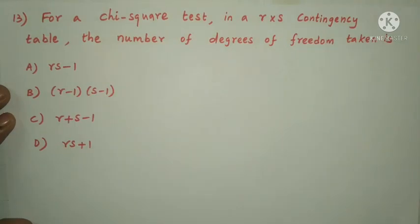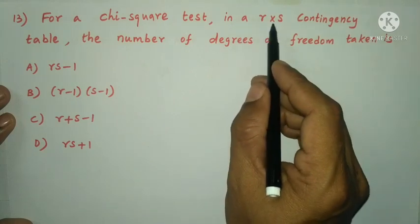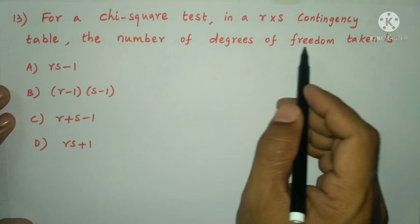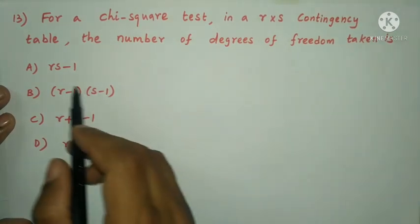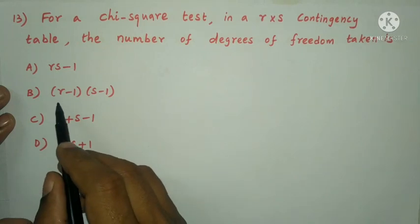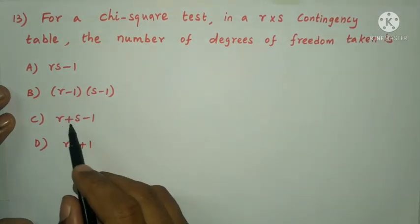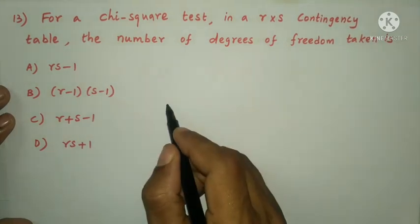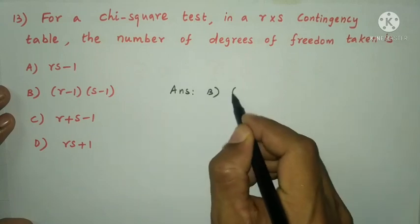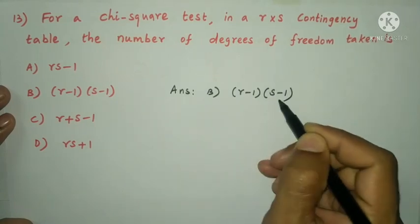Next question: for a chi-square test in an r×s contingency table, the number of degrees of freedom is (r-1)(s-1). The answer is option B, r minus 1 into s minus 1.